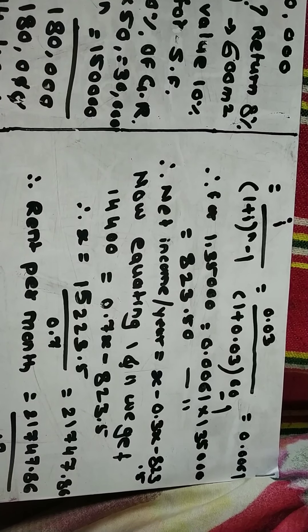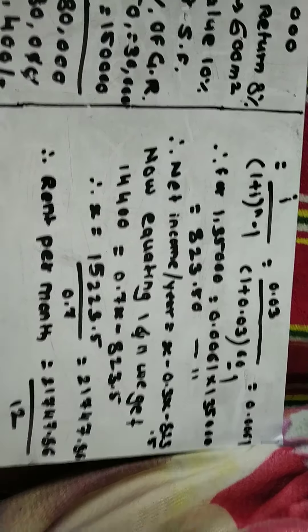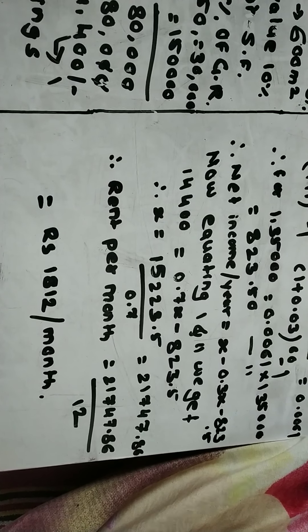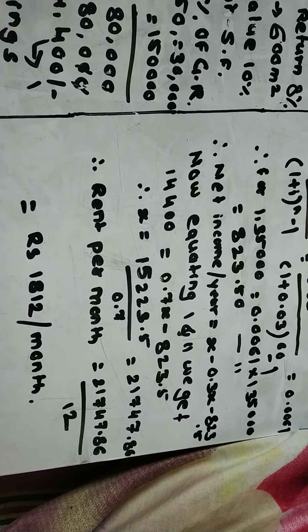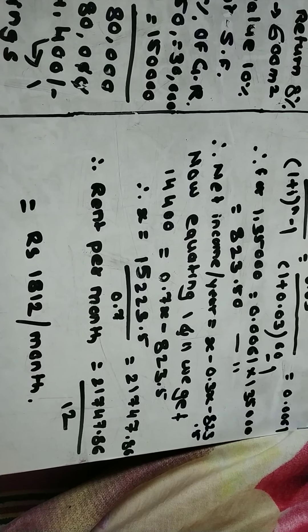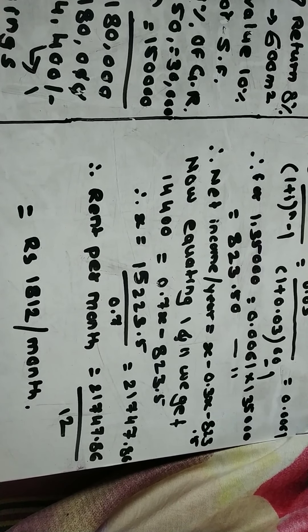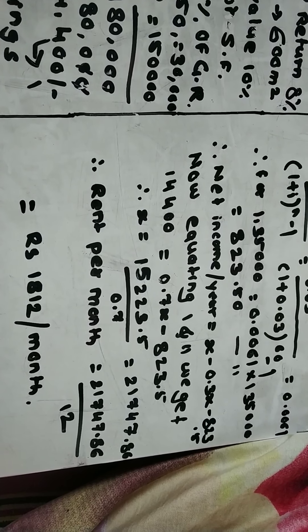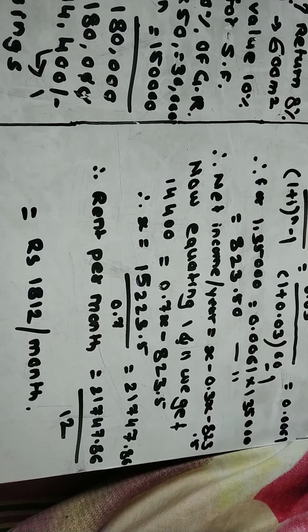For rupees 1 lakh 35,000, the annual sinking fund equals rupees 823.5. This is Equation 2. Therefore, the net income per year is equal to x minus 0.3x minus 823.5. Equating Equation 1 and Equation 2: 14,400 = 0.7x minus 823.5.